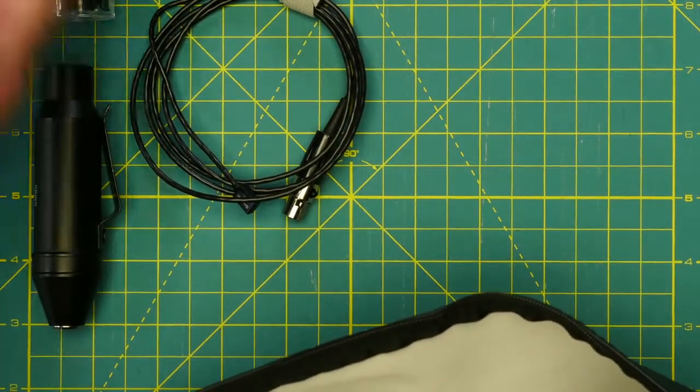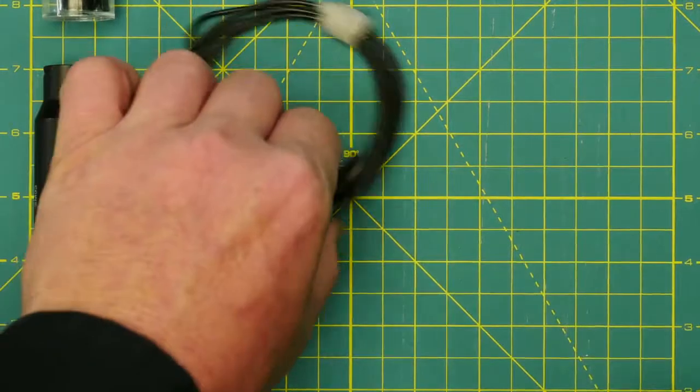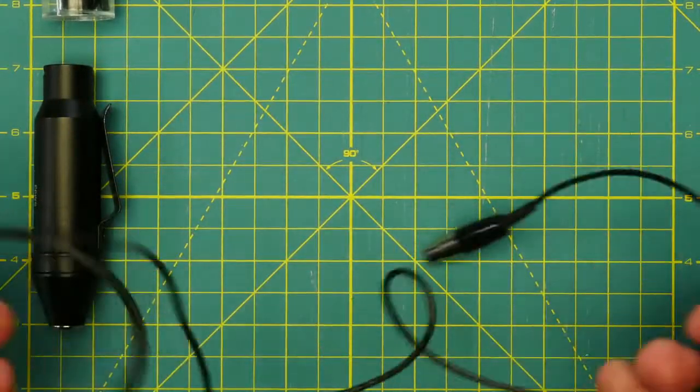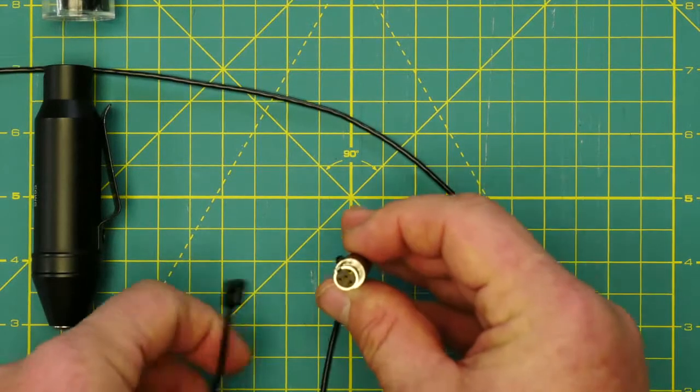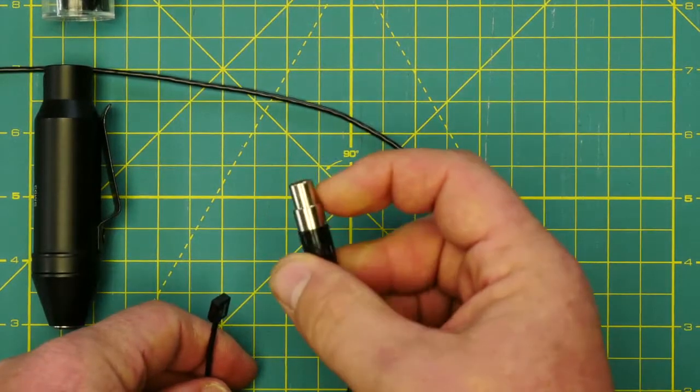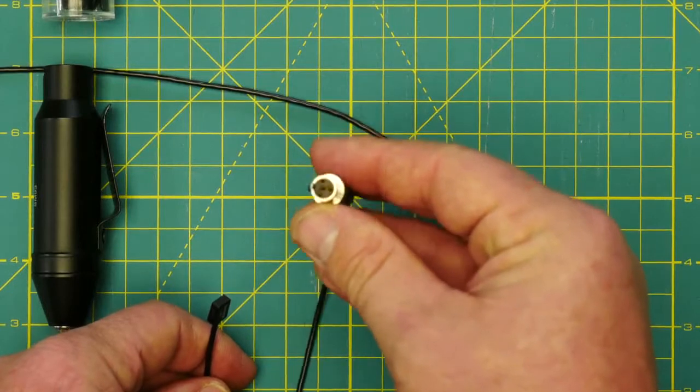So this mic has about a four-foot cable, which is pretty standard for a lav mic like this. This connector is called a TA4F. You can see it has four pins. It looks very similar to the TA5F for electrosonics.